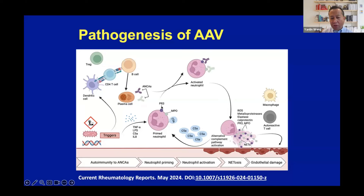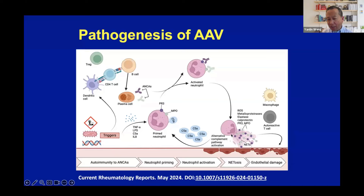So the ANCA recognizes this antigen, then leading to neutrophil activation. And that develops reactive oxygen species and other proteins leading to NETosis — the NET formation. Alternative complement pathway activation is also very important in the pathogenesis of ANCA vasculitis. That's the NETosis NET.